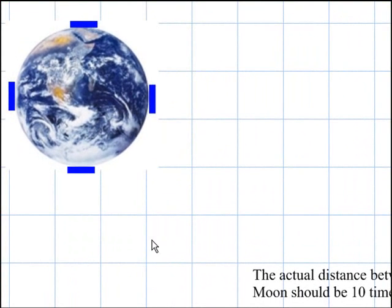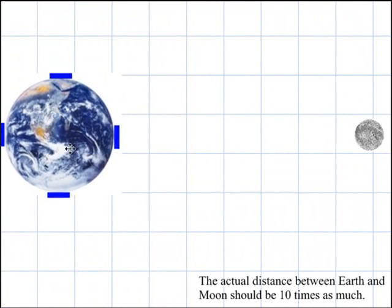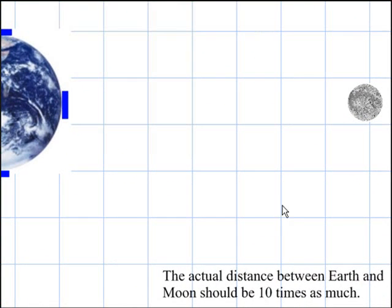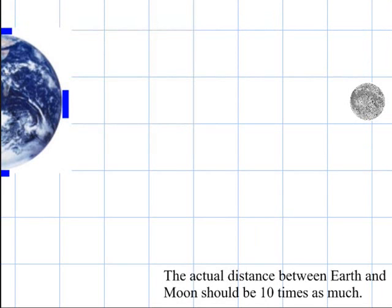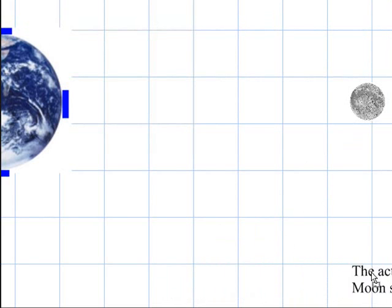This is about tides. Here we have the Earth and over here is the Moon. The relative sizes are actually to scale between the two — the Earth with a diameter of 8,000 miles, the Moon with a diameter a little bit more than 2,000 miles. The actual distance between the two is not to scale; the actual distance between Earth and Moon should be 10 times as much, so the Moon would actually be out of the picture. We'll keep it in frame as we look at tides.